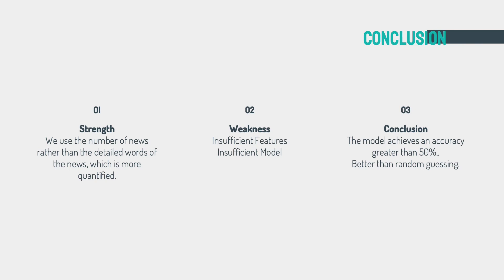In conclusion, in this project we creatively selected the feature of the number of news articles rather than the detailed words of the news, which is more quantifiable, and it turns out to be a good indicator of stock price change. However, the number of features we used is quite small, and in the future we might find more useful features to include and improve the model's performance. The test accuracy of 53% seems weak in general, but the trend of stock price is extremely complex and hard to forecast, so our performance is fair enough — at least it is better than random guessing.